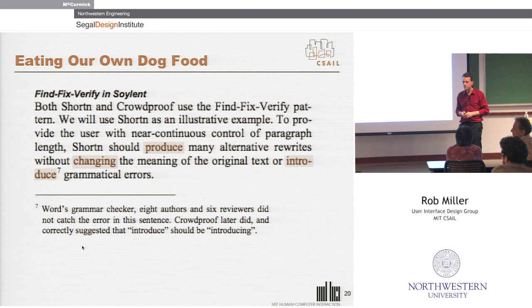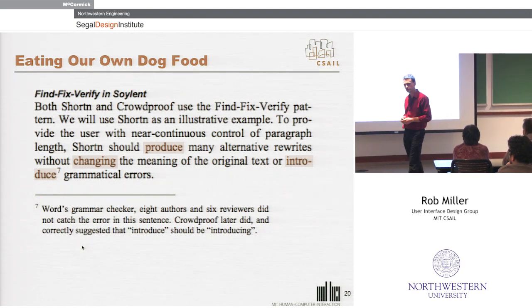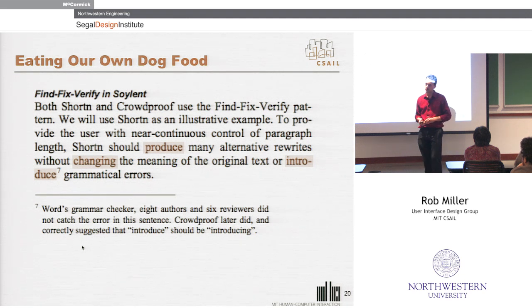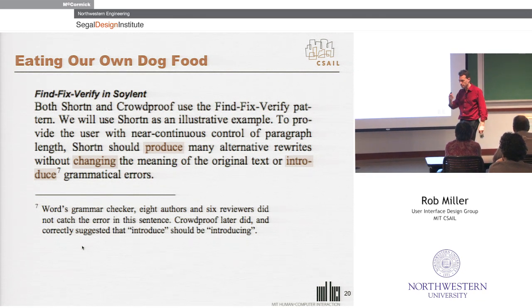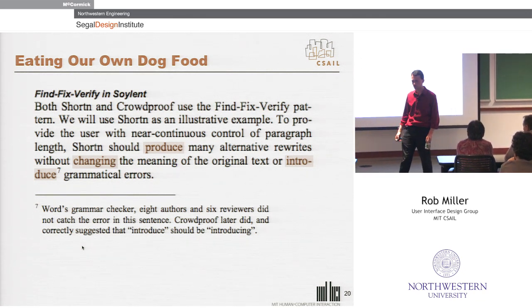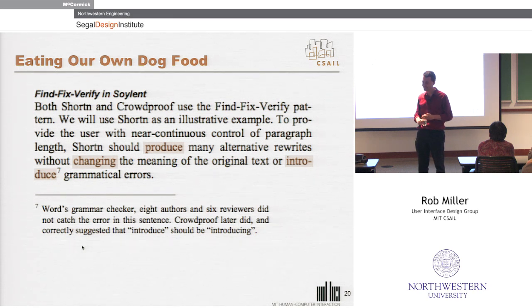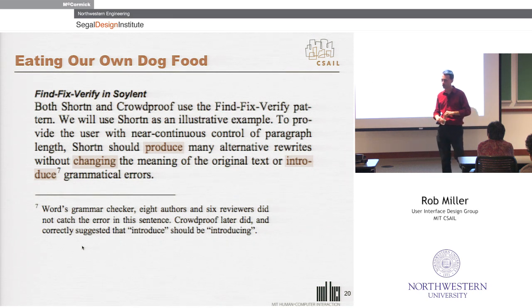One suggestion was adding constraints, like 'never use the word X.' That's a great idea — we don't have that feature yet, but you could potentially add such constraints via instructions to the crowd. One of the nice features of crowd-powered systems compared to purely software systems is you do have that ability for the end user to add instructions. We all know how to write instructions to people, and we're actually better instruction writers than we are programmers, generally speaking.